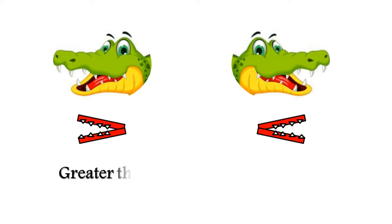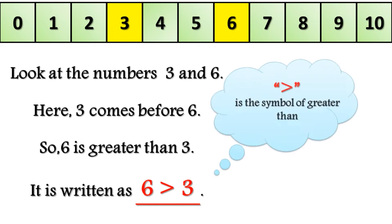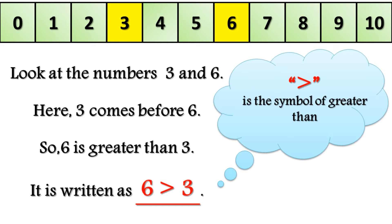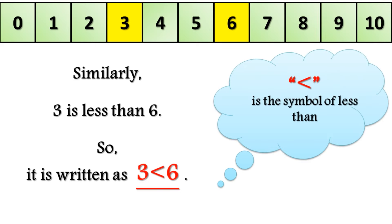This sign is for greater than, and this sign is for less than. Look at the numbers 3 and 6. Here, 3 comes before 6, so 6 is greater than 3. It is written as: 6 greater than 3. That is the symbol of greater than. Similarly, 3 is less than 6, so it is written as: 3 less than 6. That is the symbol of less than.